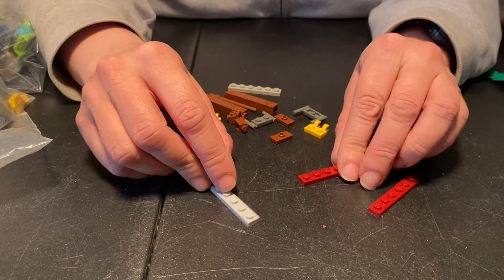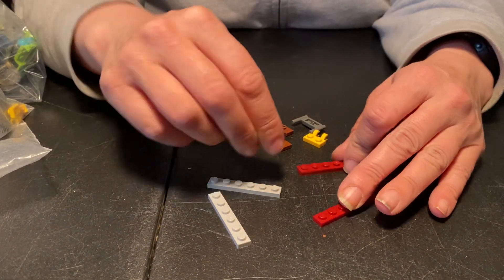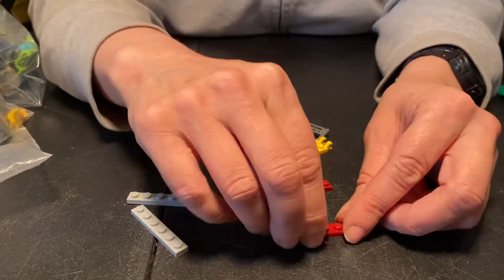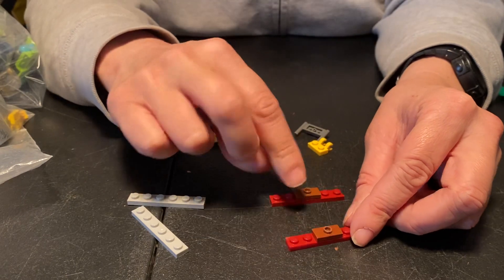Ready? Okay, so we're going to take two of your 1x6s and you're going to stick jumpers in the middle of them.